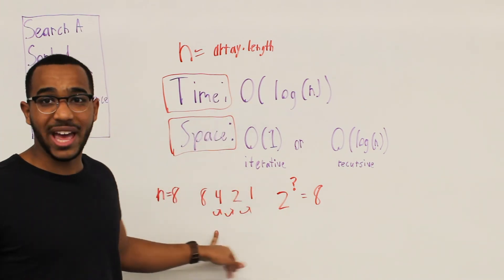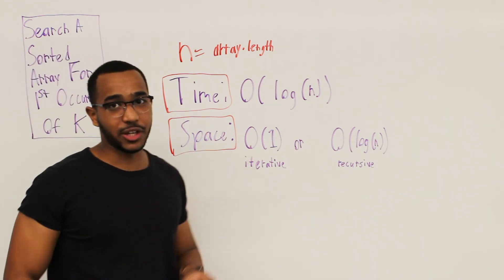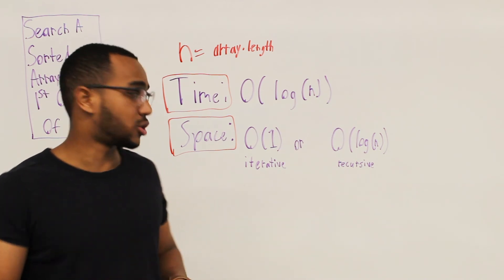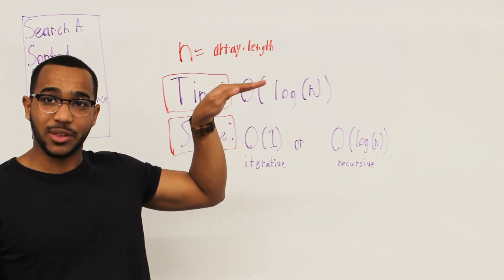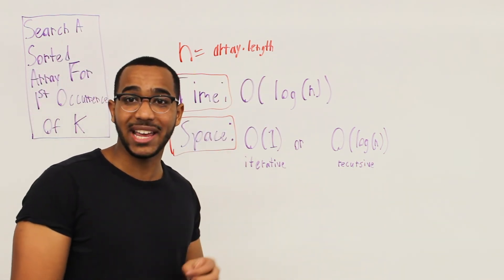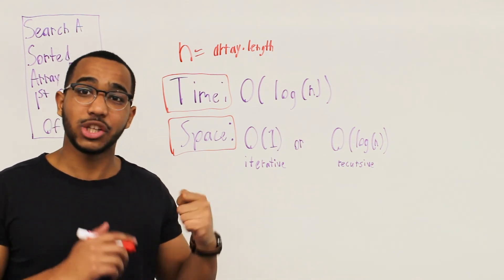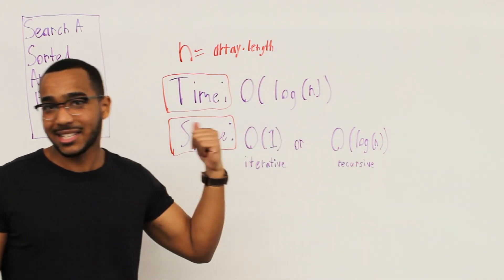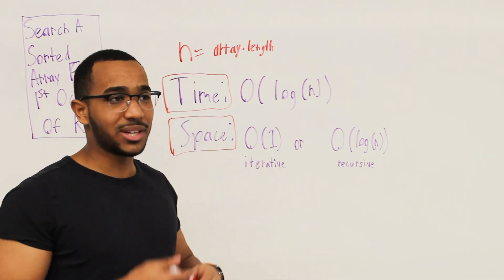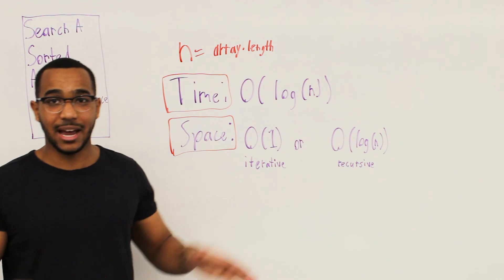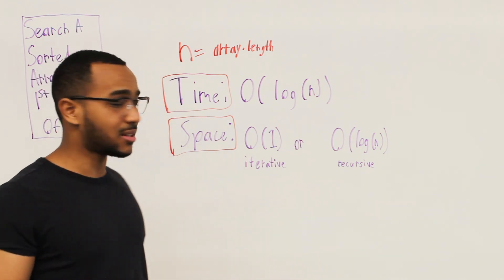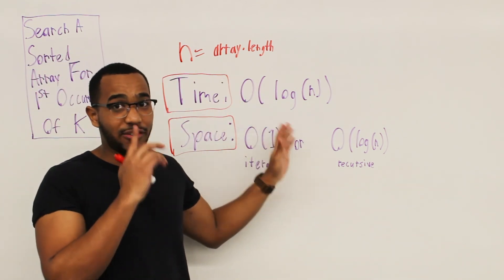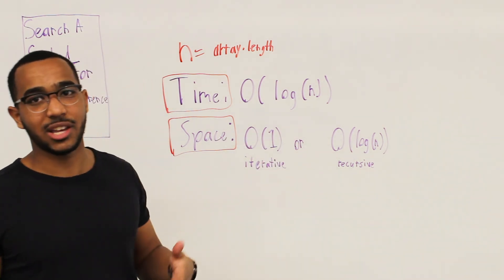At maximum we can cut the array log N times. For space complexity, if we do this iteratively, all we have is local variables — constant space, O(1). If we do it recursively, the max call stack depth is the number of times we can cut the array in half — O(log N). This is the worst case; we might find the answer instantly in constant time if k is sitting at the middle, but O(log N) is the worst case and average case for this problem.